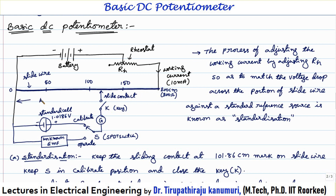The voltage measured up to a certain position — let us call it EC — depends on where you keep the tapping. The battery circuit is closed through the slide wire connected through the rheostat and returning back. The current supplied by the battery equals the battery voltage divided by the resistance of the rheostat plus the resistance of the slide wire. For a fixed value of RH, this current — called the working current — continuously passes through the circuit. In this example, I am taking 10 milliamperes as my working current.